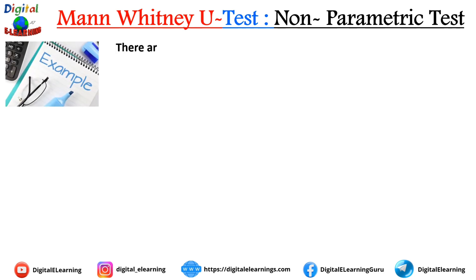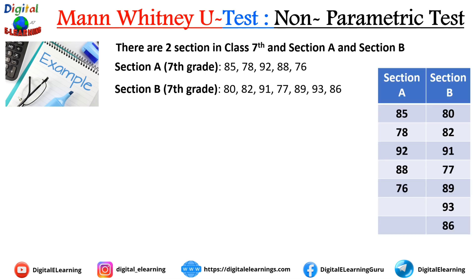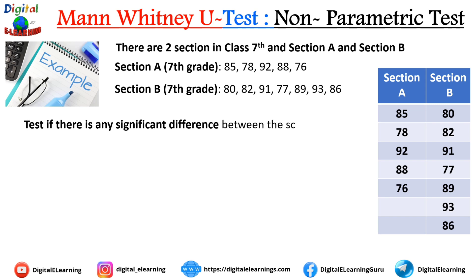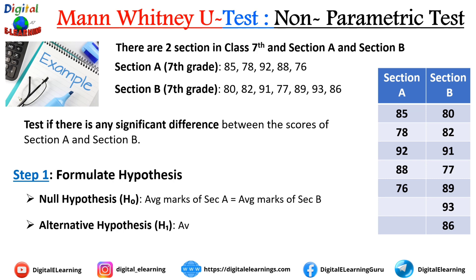Let's do an example. There are two sections in class 7th — Section A and Section B — with given grades placed in tabular form. We need to test if there is any significant difference between the scores. The null hypothesis H0 is that the average marks of Section A equal the average marks of Section B. The alternate hypothesis is that they are not equal.